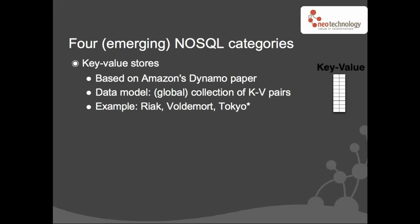The first one is the key-value stores. They're all inspired by or based on a research paper published by Amazon called Dynamo. Amazon basically said that they pushed their system to levels of scalability that few others have been able to do — they're one of the top tier web properties in the world. They did this not by using only an SQL database, but by building their own database called Dynamo, which is basically a global distributed hash table, now called the key-value store.